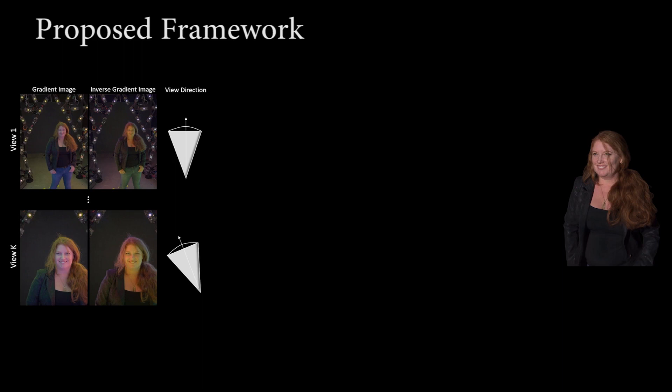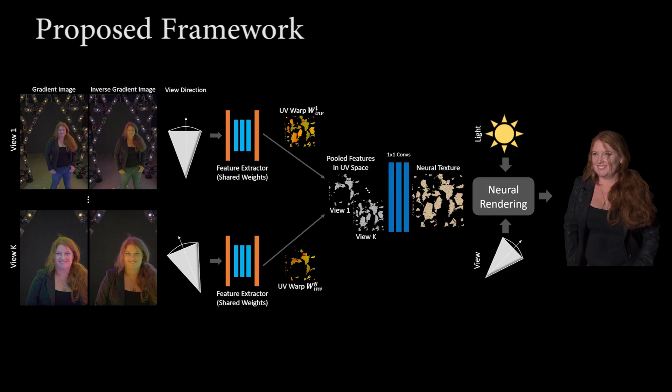To accomplish this, we first leverage the mesh's parameterization to warp features from the gradient input images into UV texture space where they can be aggregated. We then again leverage the mesh's parameterization to warp the neural texture into the novel view for use as input to the neural renderer. The neural renderer is able to compensate for inaccuracies in the geometry or calibration so as to generate a realistic image.